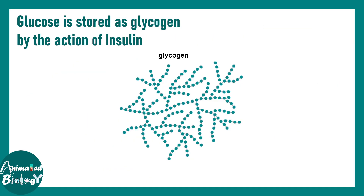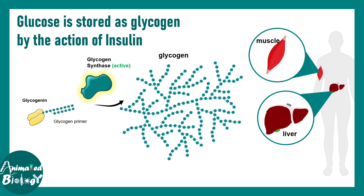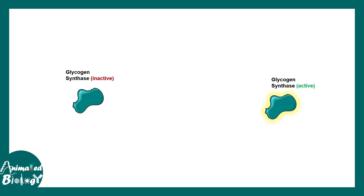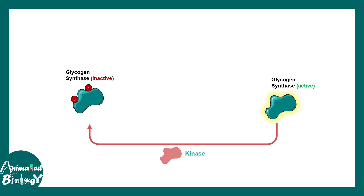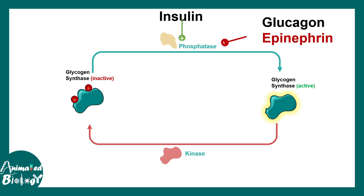Glucose gets converted into glycogen and stored in muscle and liver for energy-demanding situations. A specific enzyme called glycogen synthetase polymerizes glucose into glycogen, and it has active and inactive states. Insulin ensures this enzyme gets activated — a phosphatase activity is required for activation, and insulin positively regulates that phosphatase. Glucagon and epinephrine negatively regulate it, while glucagon positively regulates kinase action which prevents activity. That's how glucagon and insulin play opposing roles.